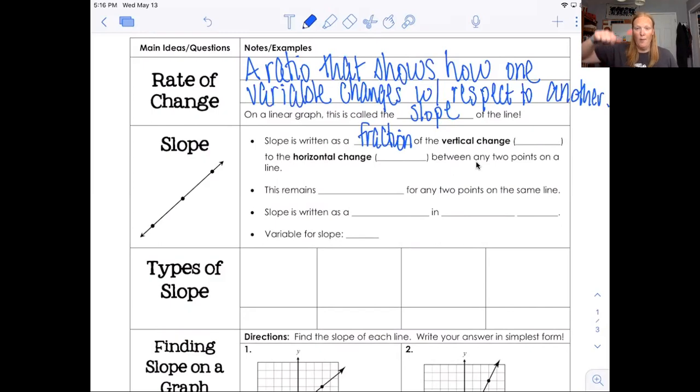It's going to talk about the vertical change, so how much is the graph going up and down, and we call this the rise. So how much is the graph rising? How much is the graph running? The horizontal change would be side to side along the x-axis, and that's the run.